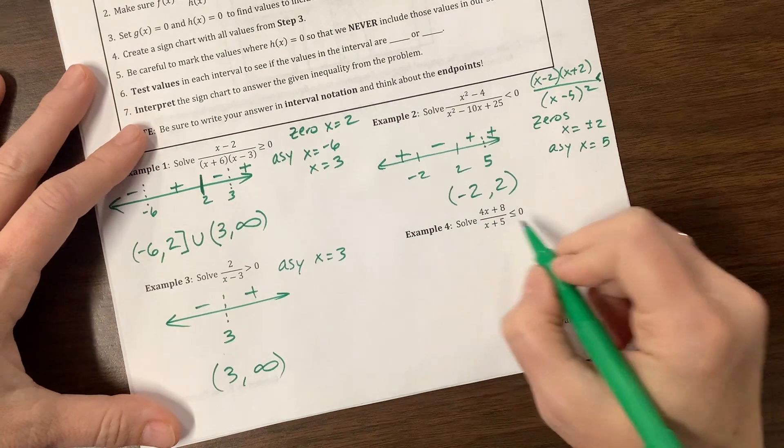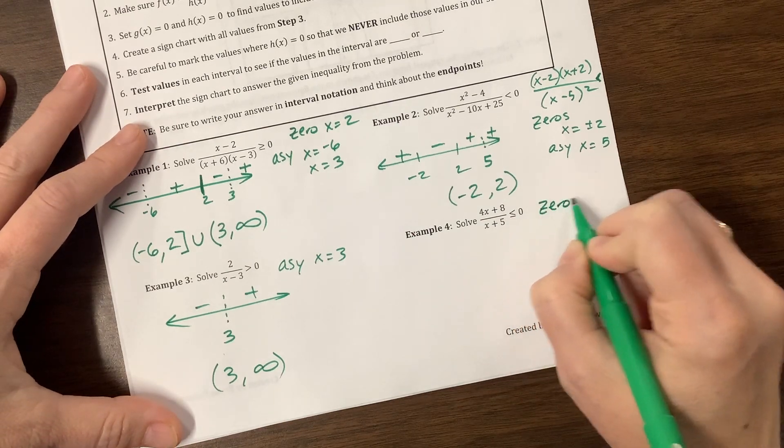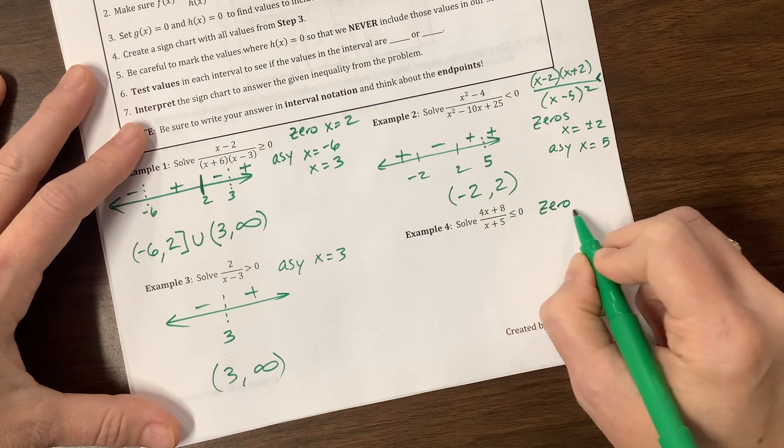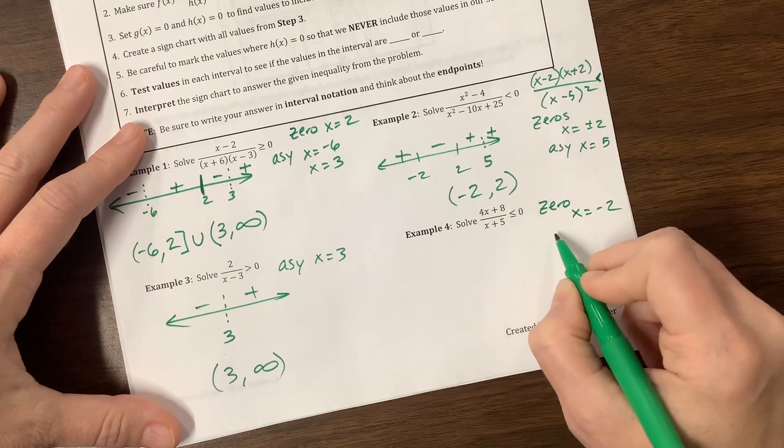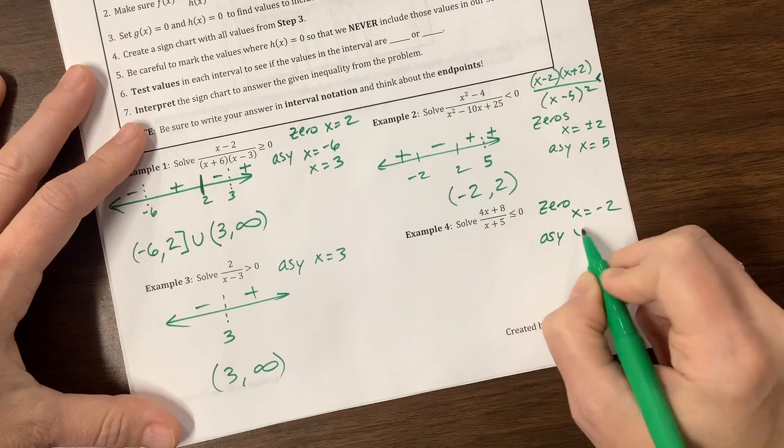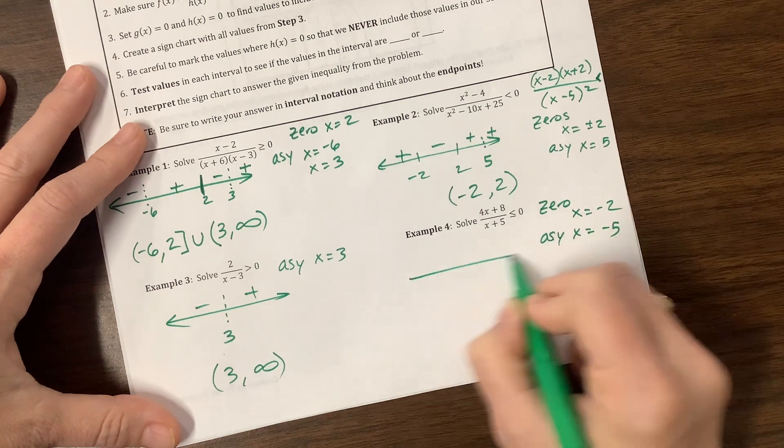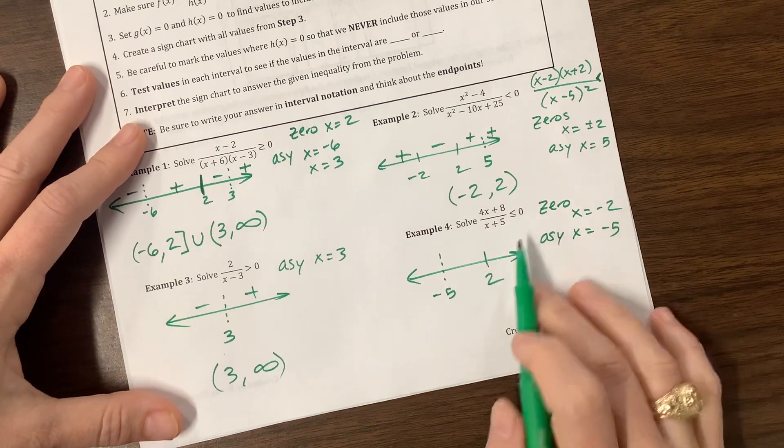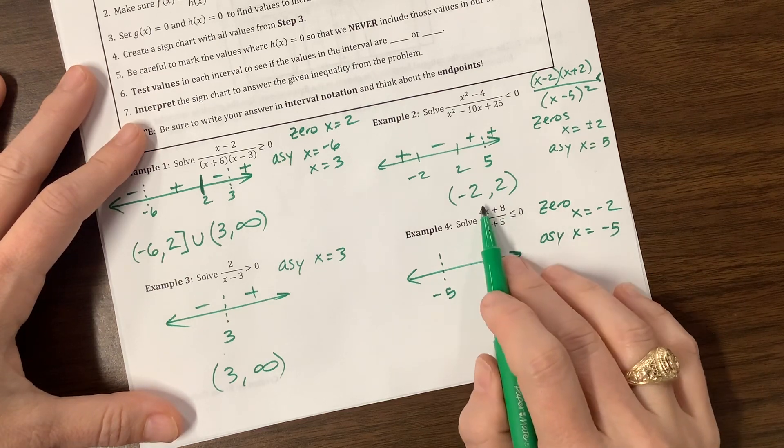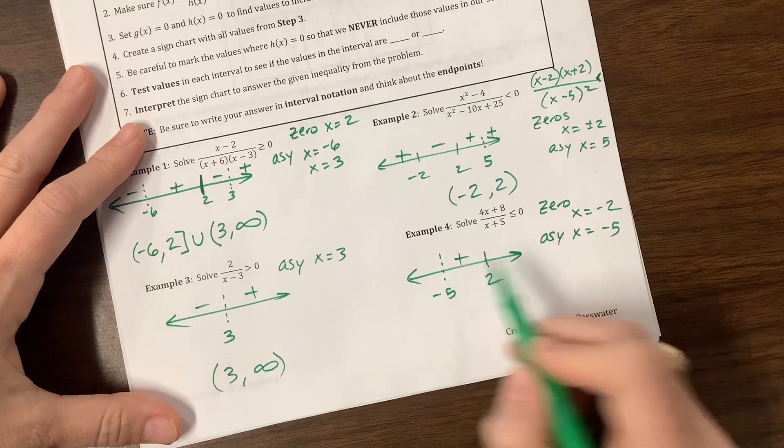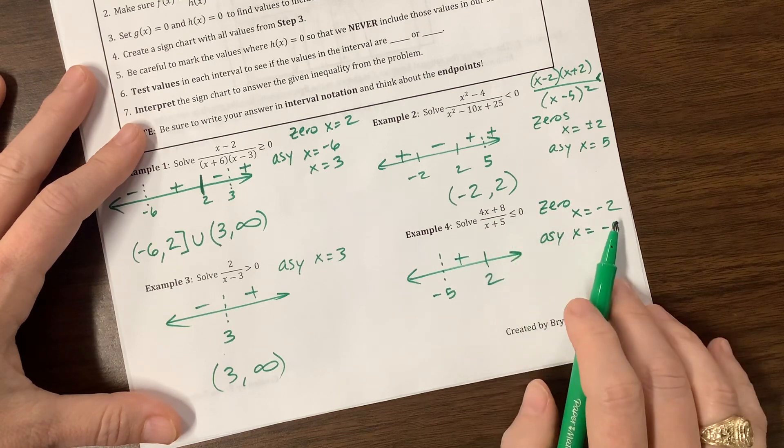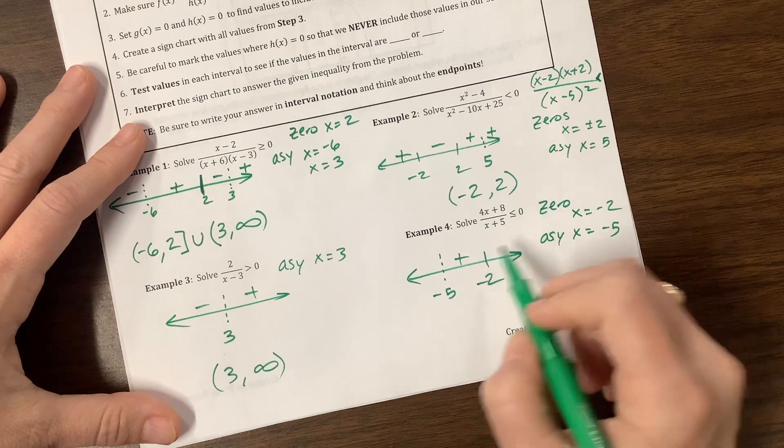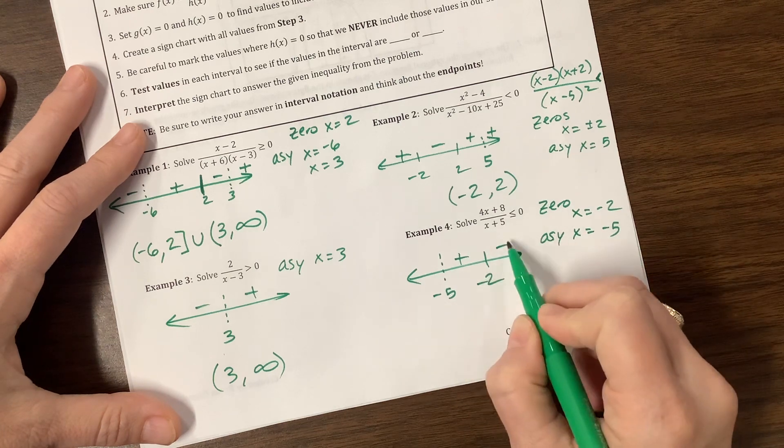And on this one, I have a zero, set this equal to 0, subtract 8, divide by 4 is negative 2, x equals negative 2. I have an asymptote when x is equal to negative 5. Asymptote at negative 5, zero at negative 2. Let's plug in 0, that's gone, we're left with something positive. Let's plug in, oh, I said negative 2. Okay, my bad. So 0 is now over here. This is going to be positive.